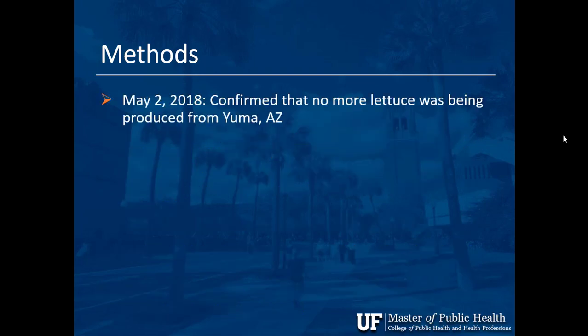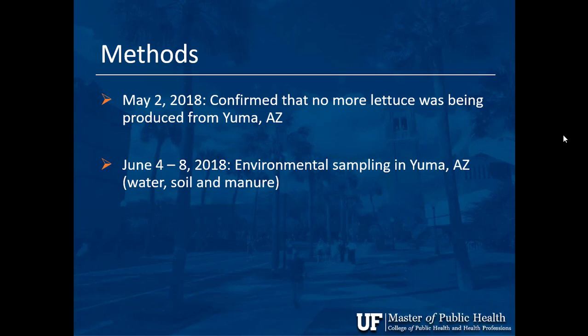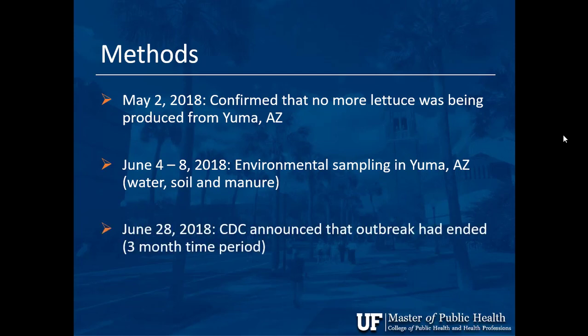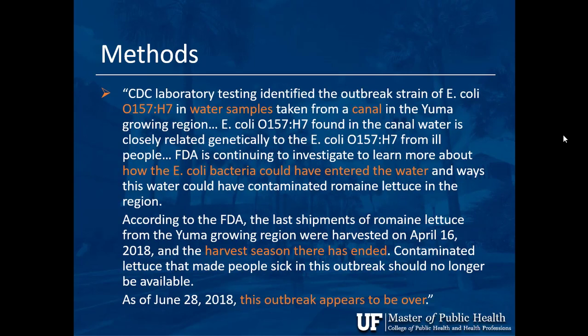June 4th to June 8th, they began sampling the environment — testing water, soil, and manure in the region. June 28th, about three months in, they issued an update: people had stopped getting sick, Yuma had stopped shipping lettuce, and the pieces were fitting together — the outbreak appeared to be over. Environmental testing found the O157H7 strain in water canal samples, and genetic fingerprinting matched it to the strain found in sick patients, linking it to a canal in the Yuma region.